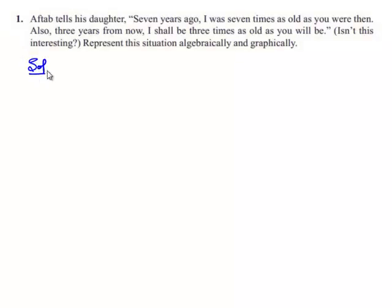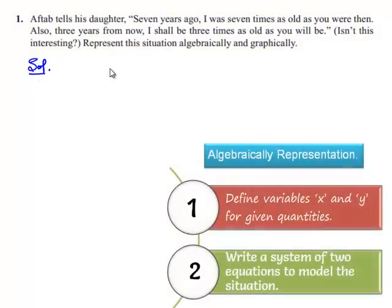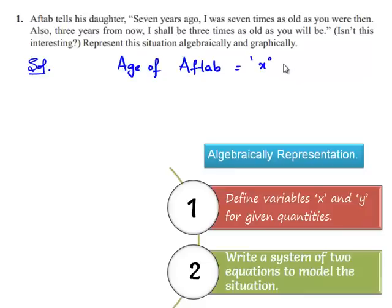So the present age of Aftab is assumed to be x years, and the present age of his daughter is equal to y years.